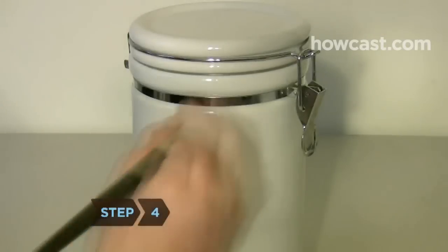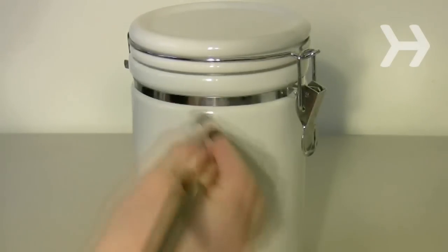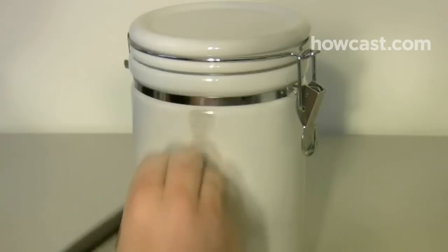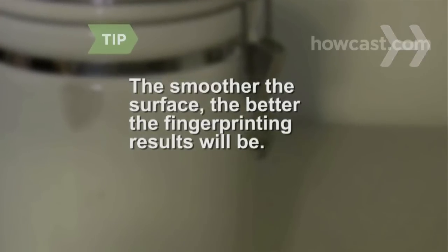Step 4. Brush the area you want to search for fingerprints, coating it lightly with soot. If you need more soot, hold the balloon over the flame again until you get enough soot to dust with. The smoother the surface, the better the fingerprinting results will be.